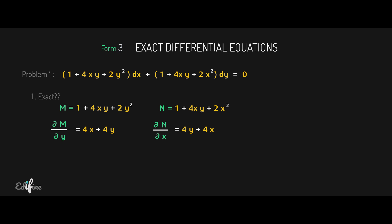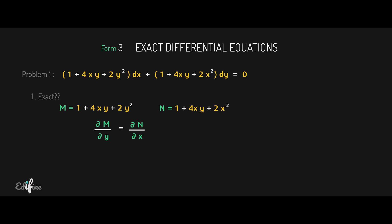In the second term, y is treated as a constant, so 4y · (derivative of x) = 4y · 1 = 4y. It is clear that ∂M/∂y = ∂N/∂x, hence we prove that the given differential equation is exact.